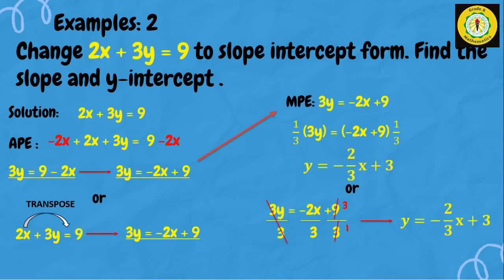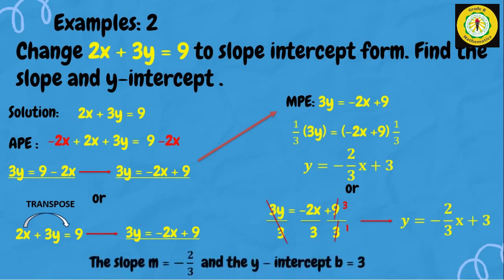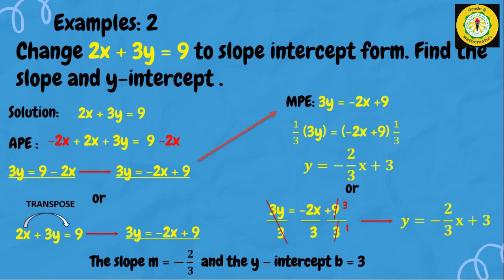Then we find the slope and y-intercept. Our slope is m equals negative two-thirds and the y-intercept is b equals 3.